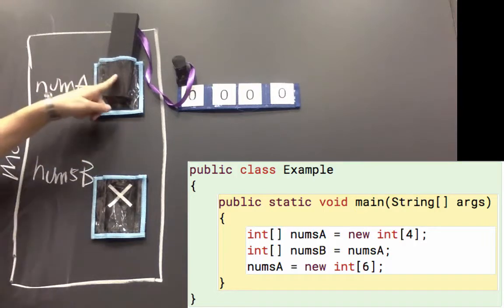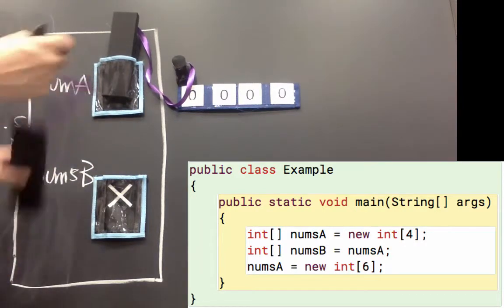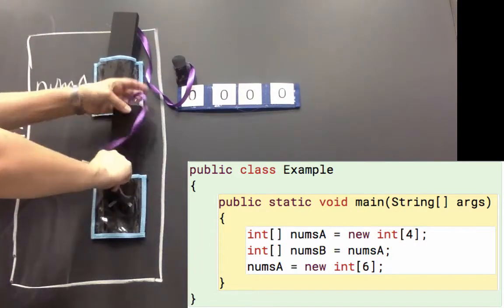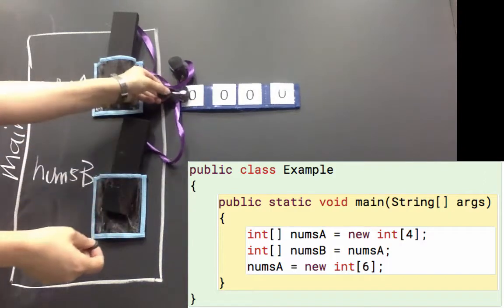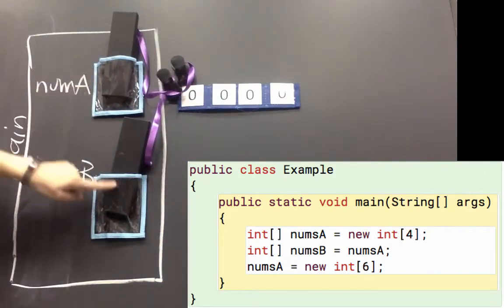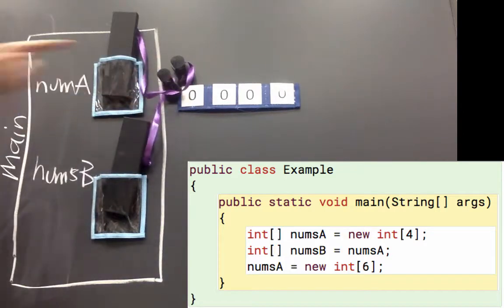So numsB is going to get a copy of what's in numsA. So numsB gets a copy of what's in numsA, so now they both reference that same array. So numsA and numsB both reference that same array. As a side note, they'd be equal equal to each other.